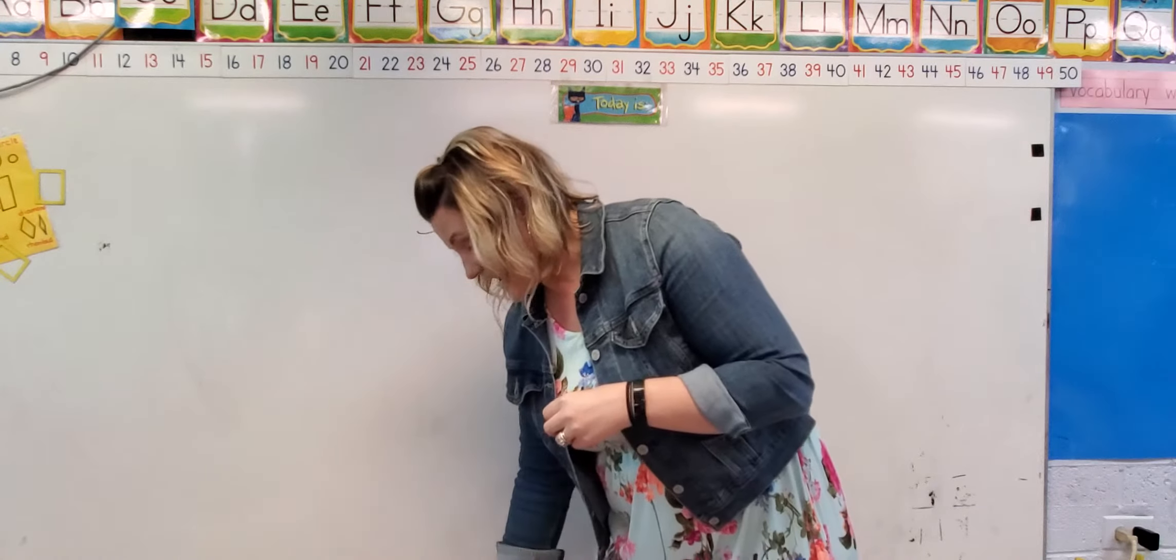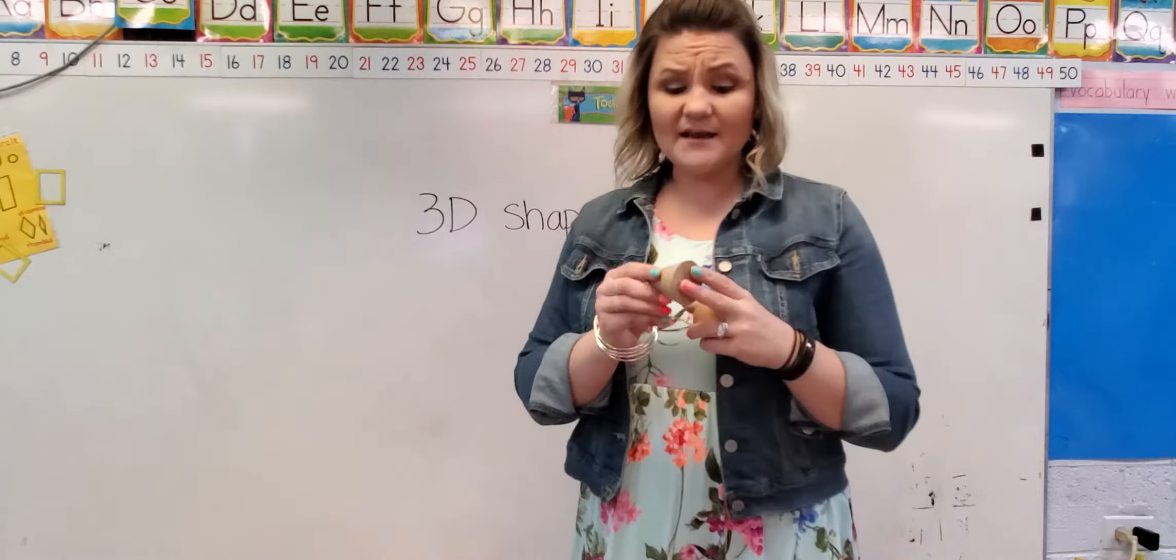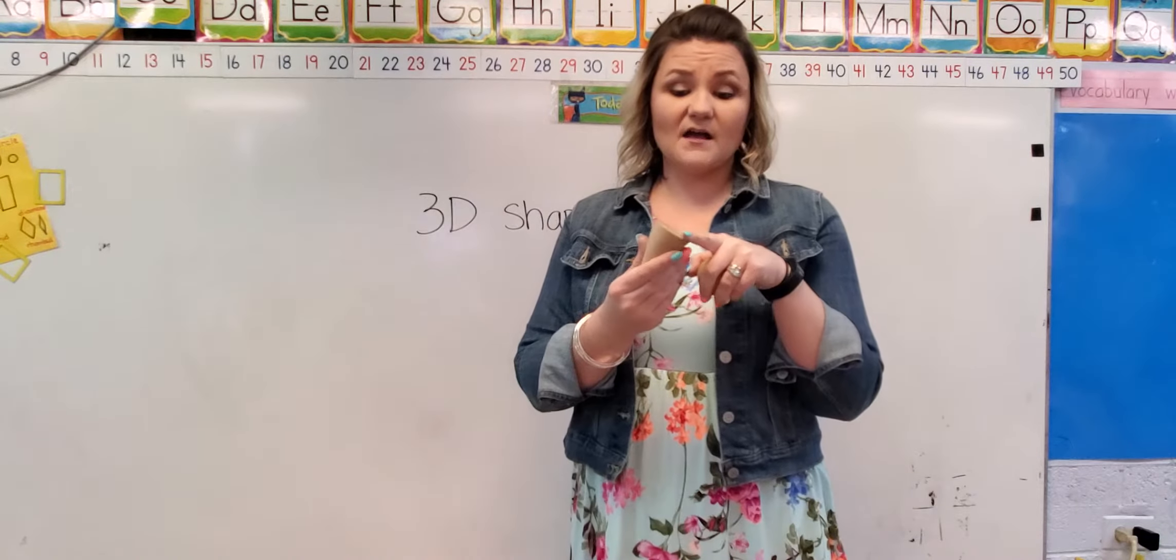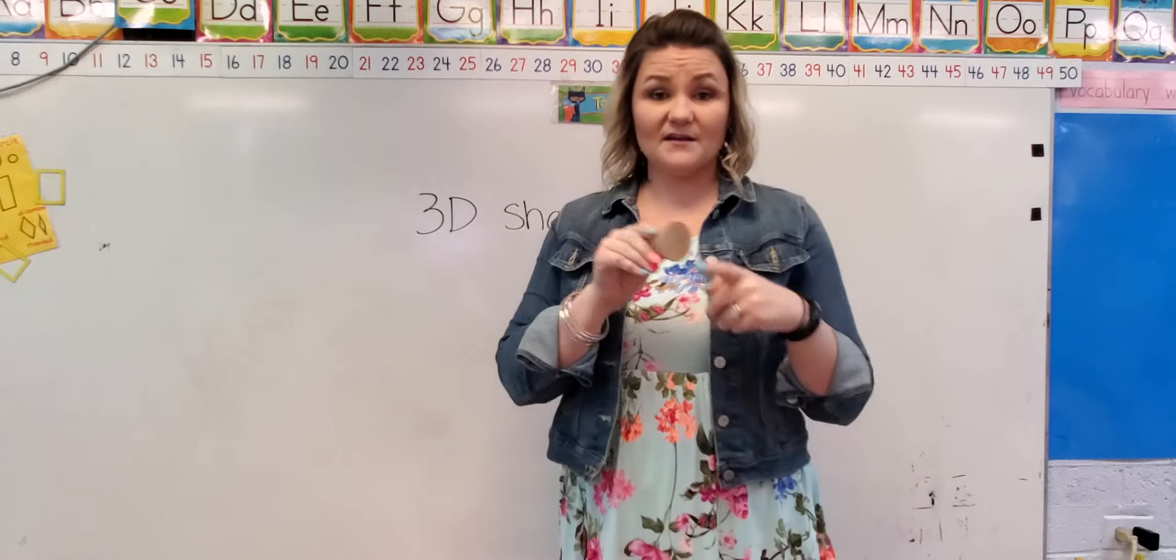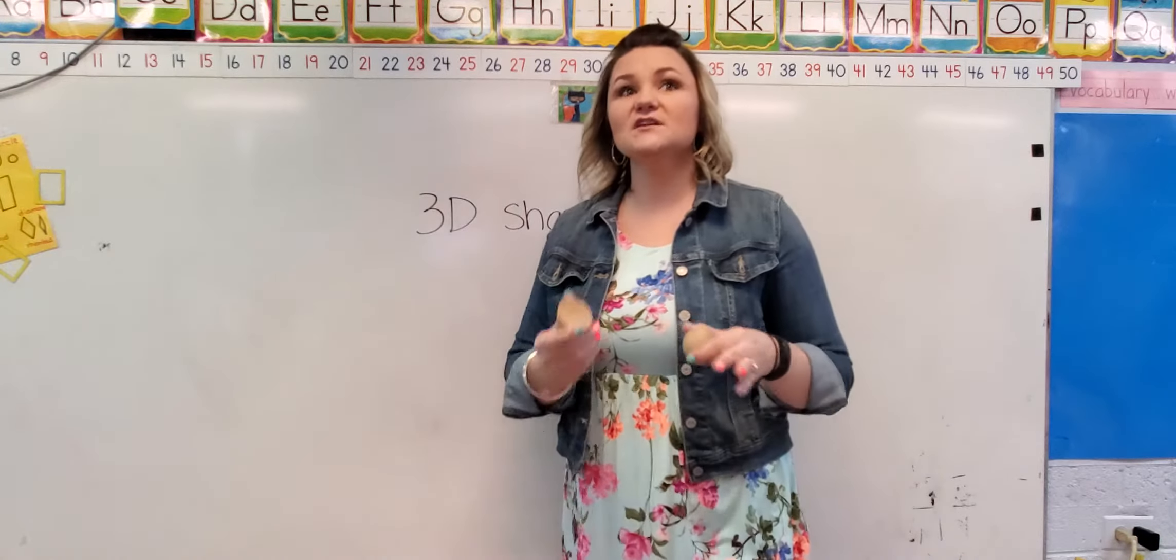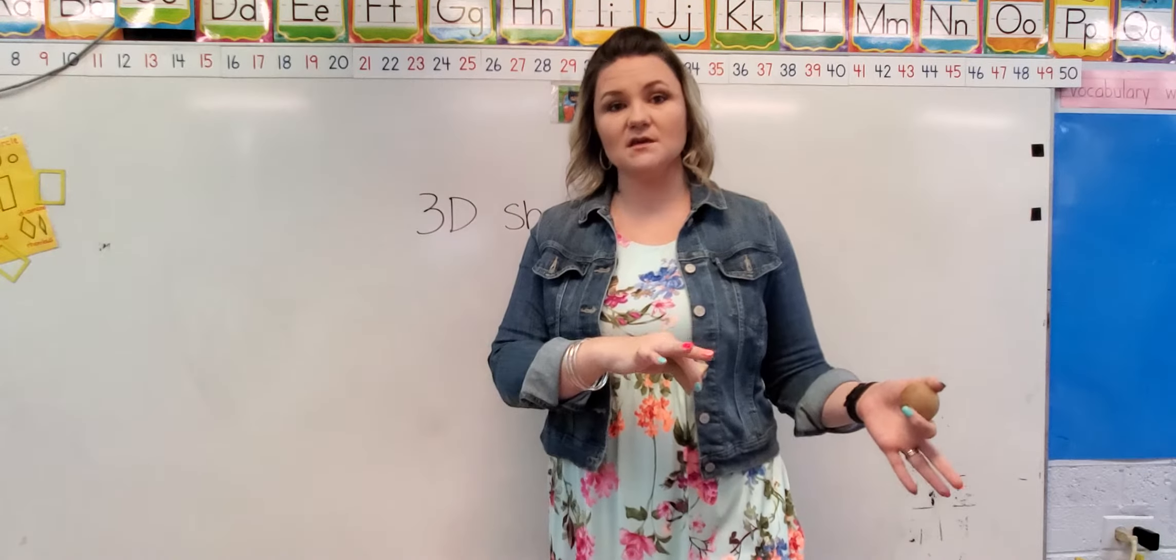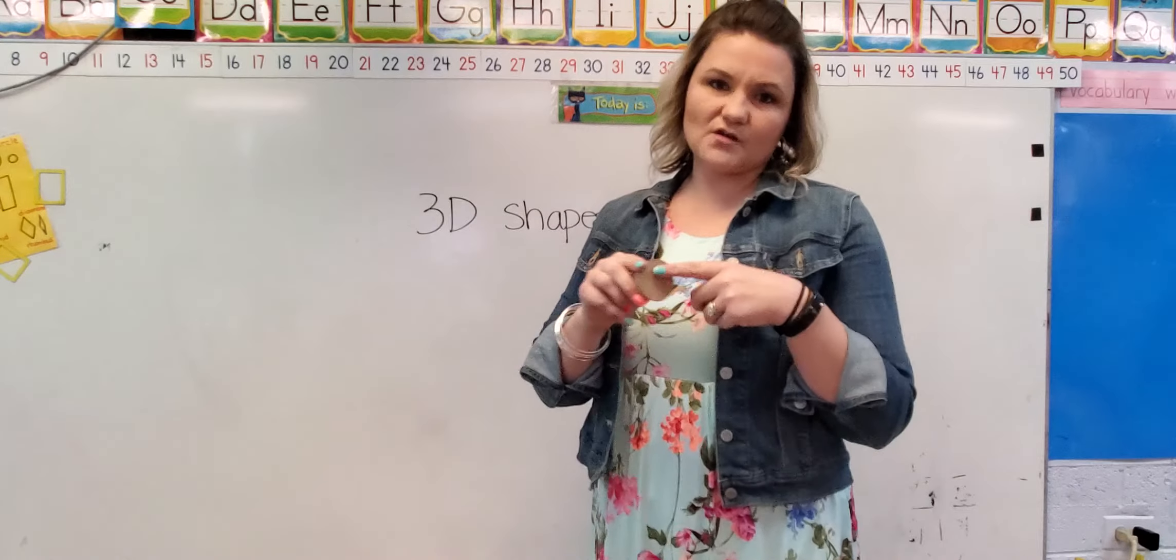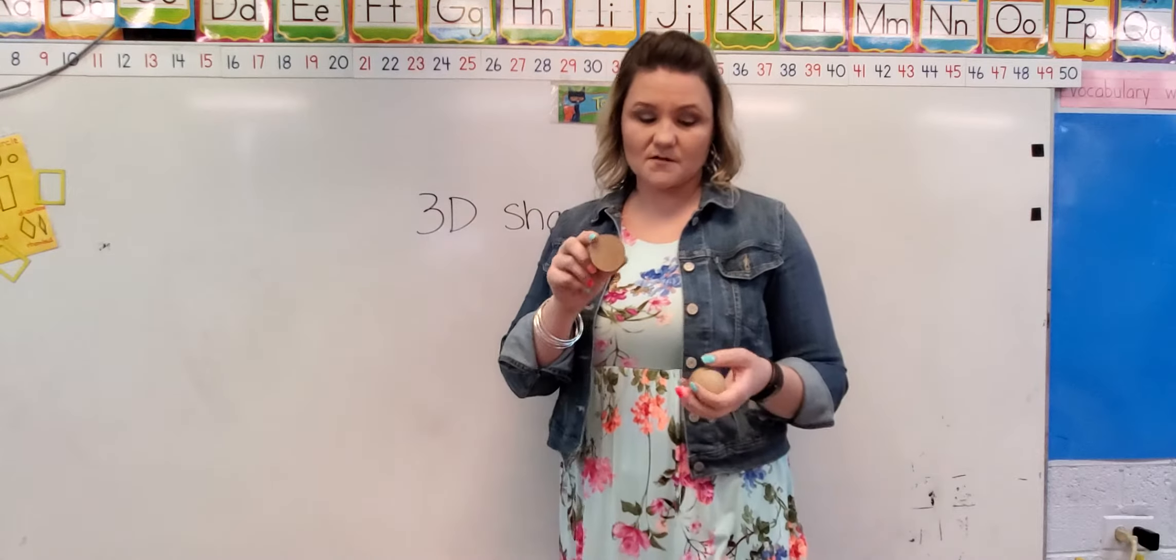We also have a cone and it has one point or a corner and it has one face. And it's round, so it's a circle. So we want to use our 2D shape terminology with our 3D shapes. Does that make sense?